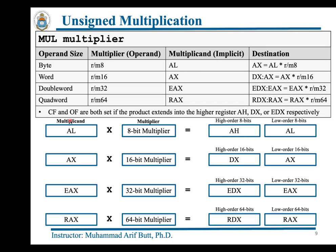The carry and overflow flags are both set if the result extends into the higher registers — meaning AH, DX, EDX, and RDX. Other than the carry and overflow flag, the sign, zero, parity, and auxiliary flags are undefined after an unsigned MUL instruction.